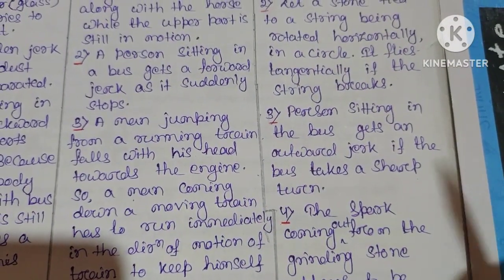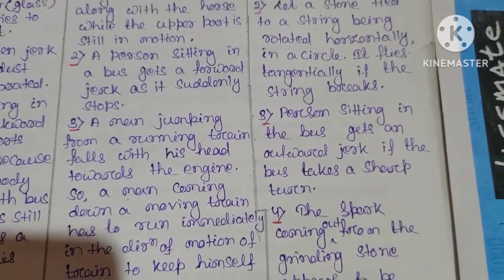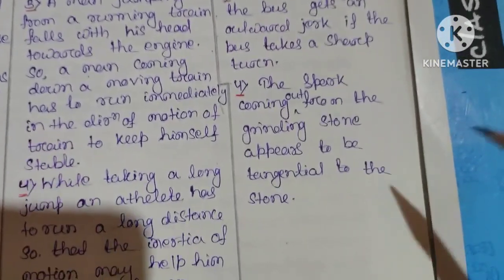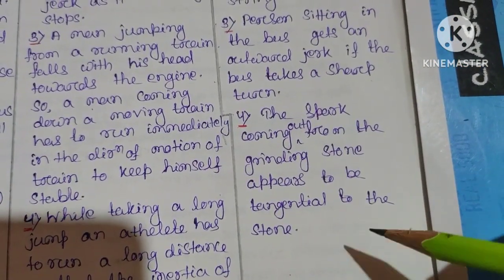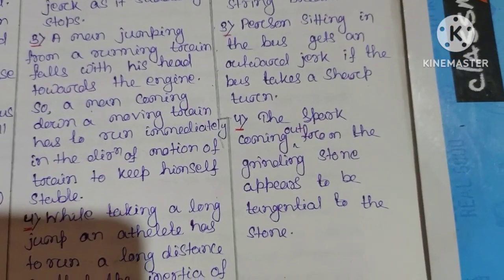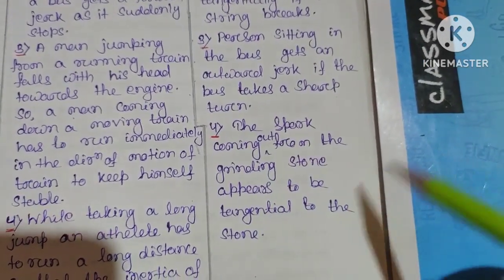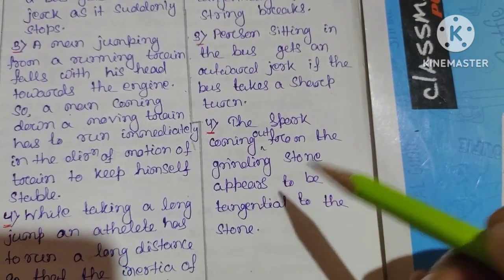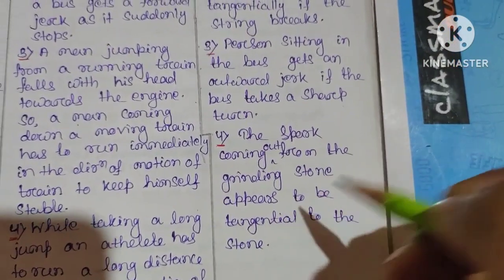This is because of inertia of direction. The last one: the spark coming out from the grinding stone appears to be tangential to the stone. This is because of inertia of direction. In a grinding machine, you can see the sparks flying tangentially.